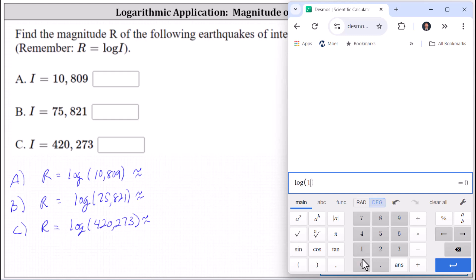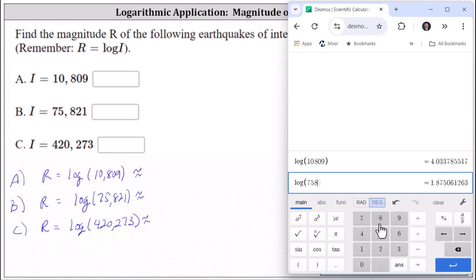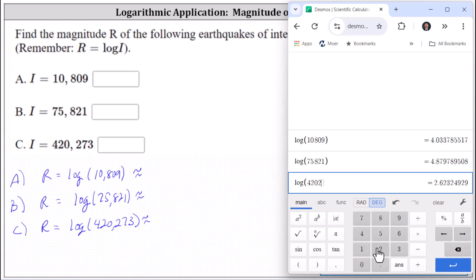And for A, we enter 10,809. I'm gonna go and enter all three of these at one time. For B, we have R equals the common log of 75,821. For C, we have R equals the common log of 420,273.